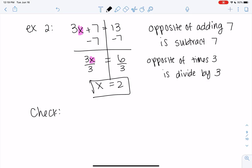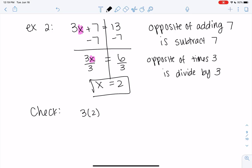And we'll check. So 3 times 2 plus 7. And then we want to make sure that's equal to 13. So 3 times 2 is 6 plus 7. And we get 13. So it's correct. If we get a different number on both sides, then we probably made a mistake somewhere.